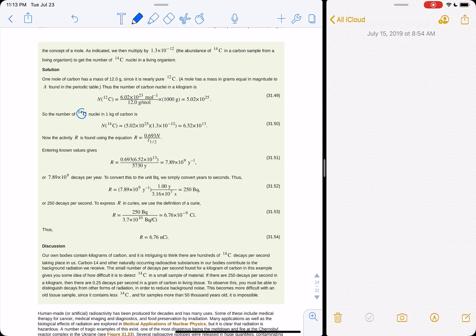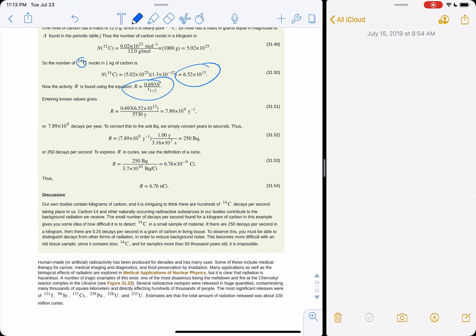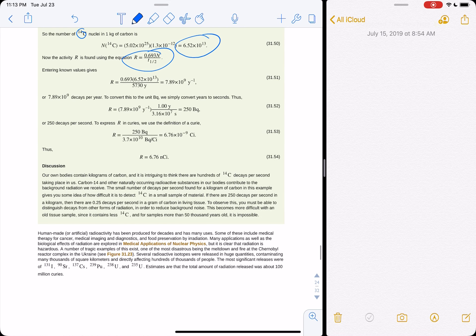And so the number of carbon-14, nuclei in one kilogram of carbon is that, just unit conversion here. So then the activity is going to be plugging all these things in, and it's going to be 7 billion activities per year, or 7 billion decays per year. To go to Bacquerel's, we've got to put it into seconds, so that's 250 decays per second. Put it in terms of curies, it's 6.76 nano-curies.